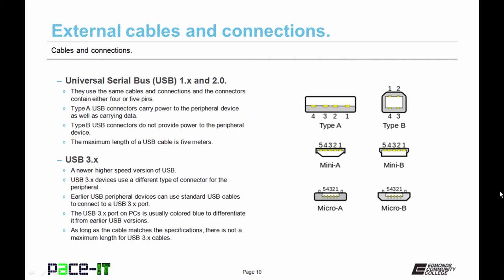Type A USB connectors can carry power to the peripheral device as well as carrying data. Type B connectors do not provide power to the peripheral devices. The maximum length of a USB cable is five meters.